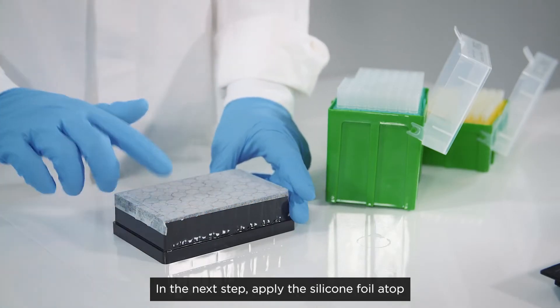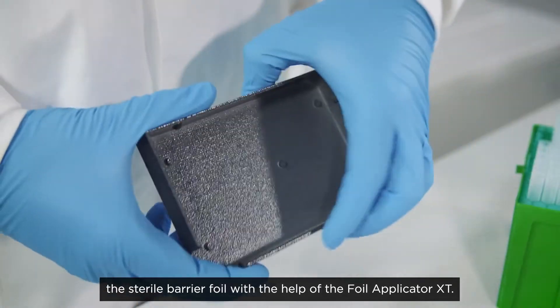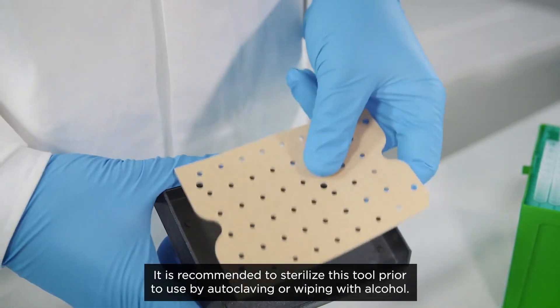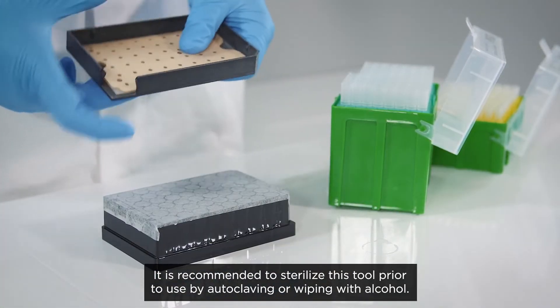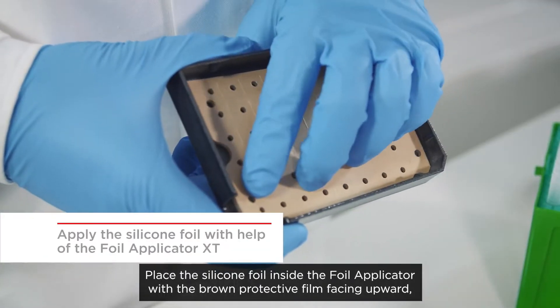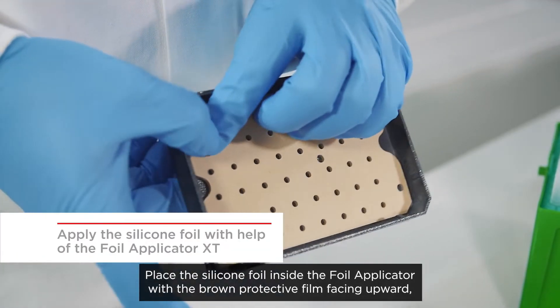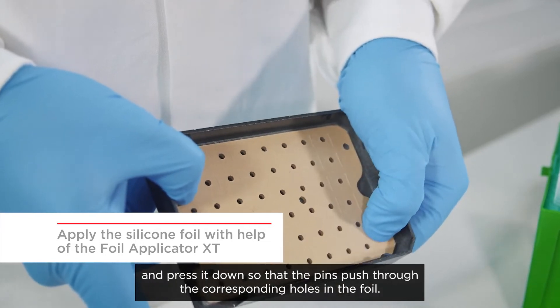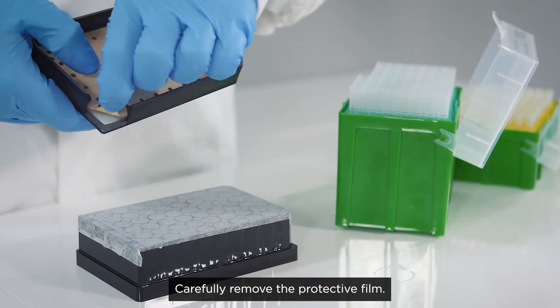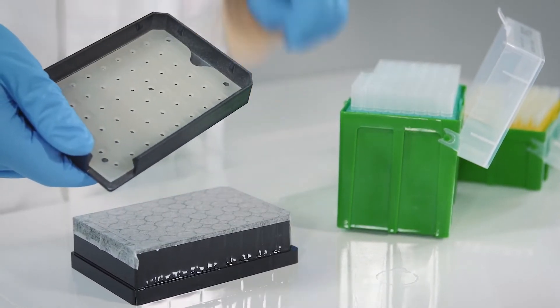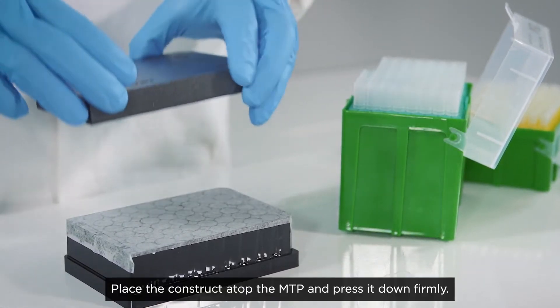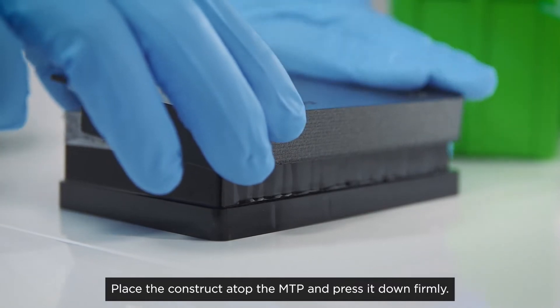In the next step, apply the silicone foil atop the sterile barrier foil with the help of the Foil Applicator XT. It is recommended to sterilize this tool prior to use by autoclaving or wiping with alcohol. Place the silicone foil inside the foil applicator with the brown protective film facing upward and press it down so that the pins push through the corresponding holes in the foil. Carefully remove the protective film. Place the construct atop the MTP and press it down firmly.